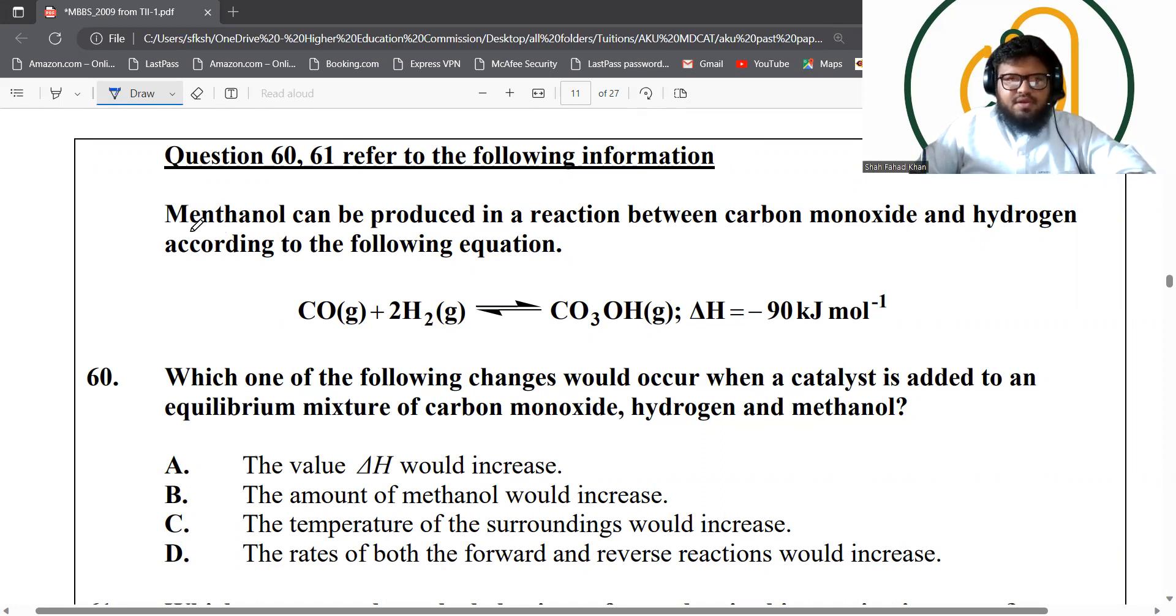AKU 2009 paper. Methanol can be produced in a reaction with carbon monoxide and hydrogen according to this equation. You can see this is an exothermic reaction. Which one of the following changes would occur when a catalyst is added to this equilibrium mixture?